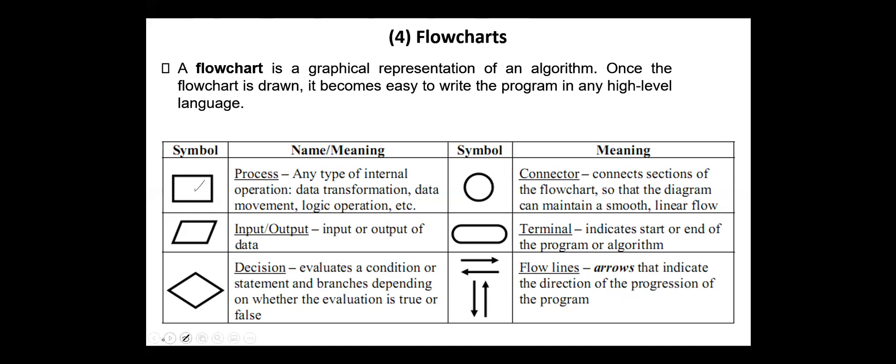The main symbols used in flowcharts are: Process, any type of internal operation, data transformation, data movement, logic operations, etc. Input, output of data. Decision symbol, evaluates a condition or statement and branches depending on whether the evaluation is true or false. Connector connects sections of the flowchart so that the diagram can maintain a smooth linear flow. Terminal indicates the start or end of the program or algorithm. And the flowlines are arrows that indicate the direction of the progression of the program.